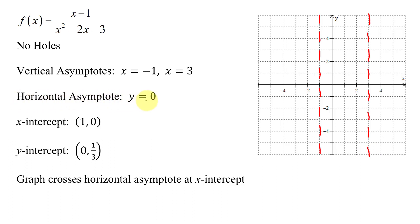Next, I have a horizontal asymptote of y equals 0 — remember, that is the x-axis — so there's my horizontal asymptote. My x-intercept is (1, 0), plotted right there. The y-intercept is (0, 1/3): x is 0, y equals 1/3, so it looks about there. The graph does cross the horizontal asymptote, at the x-intercept which I've already plotted.